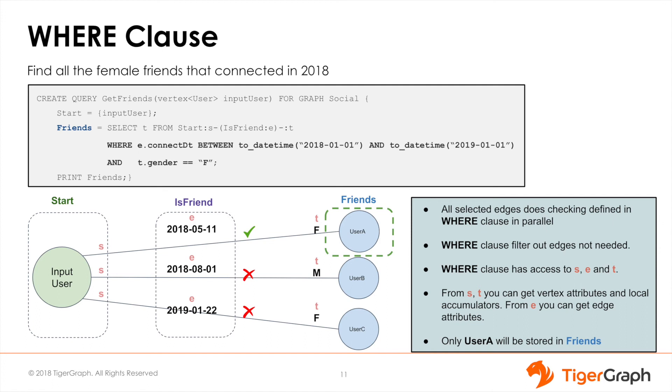Now I'll show you how to use the WHERE clause by writing a query that finds all female friends that were connected during 2018. The WHERE clause can filter out edges that do not satisfy a specific condition.